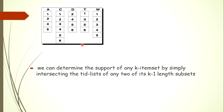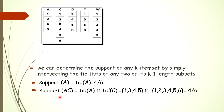Let us see how to calculate support of an itemset using the vertical TID list database. We can calculate the support of an itemset of length k by intersecting the TID list of any two of its k-1 length subsets. The support of itemset A equals the TID list of A. As the TID list of A contains 4 transactions, the support of itemset A is 4 by 6.